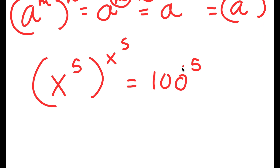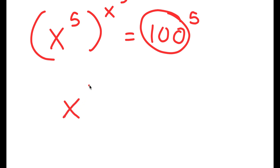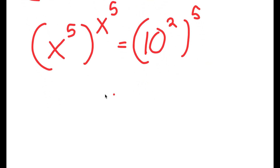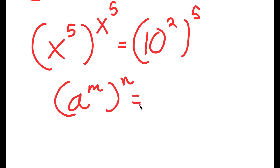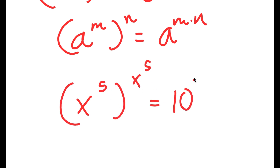From here, I'm going to rewrite 100 as 10 squared. So now I get x to the power of 5 to the power of x to the power of 5, is equal to 10 squared to the power of 5. Using the rule a to the power of m to the power of n equals a to the power of m times n, 10 to the power of 2 to the power of 5 equals 10 to the power of 10.